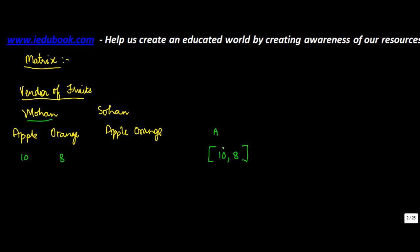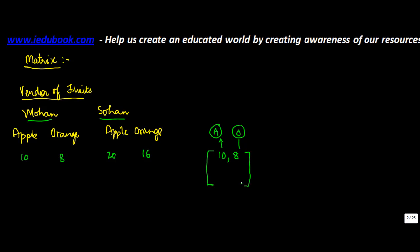In the bracket form you write 'A' and 'O' to indicate that ten corresponds to apples and eight corresponds to oranges. You develop the understanding that the first item is in respect of apples and the second is in respect of oranges. Now Sohan also has 20 apples and 16 oranges, so you extend the brackets to include his data as well.